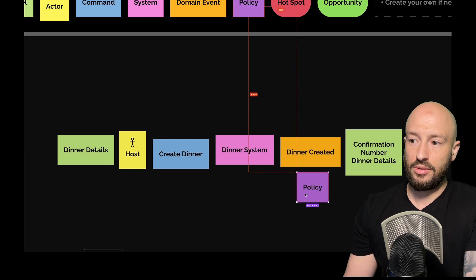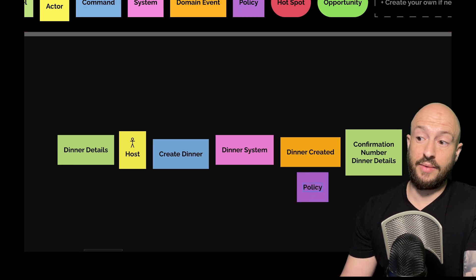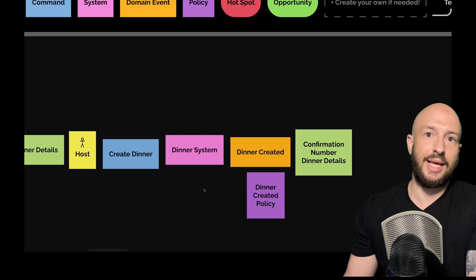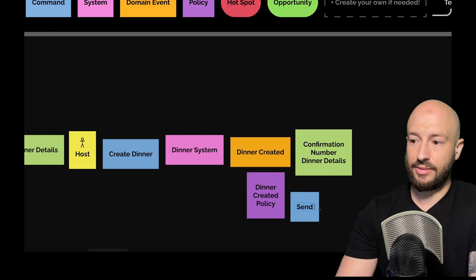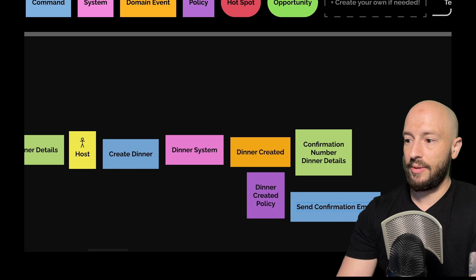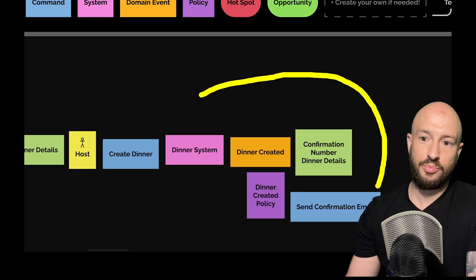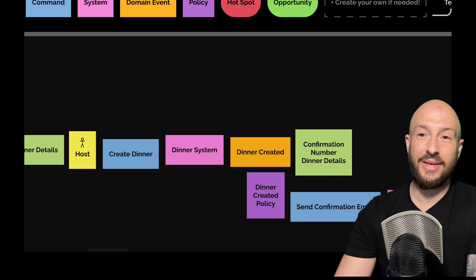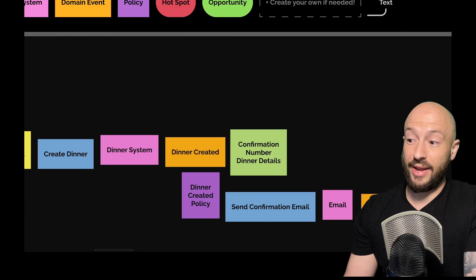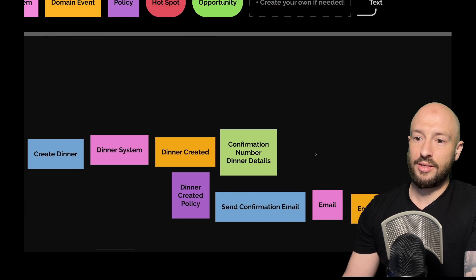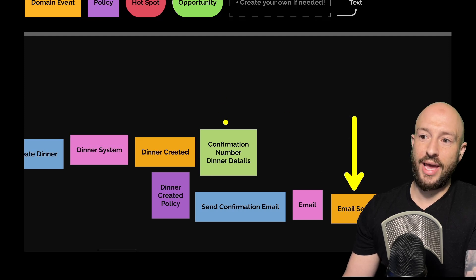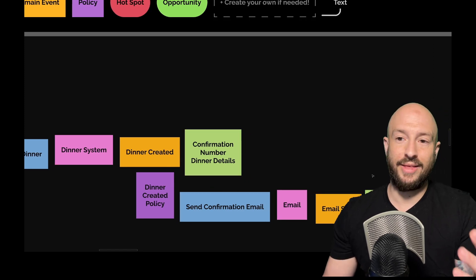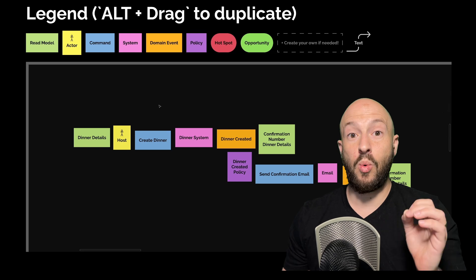After a domain event, you might also have a policy. For example, a 'dinner created' policy might trigger 'send confirmation email.' After the policy, you must have a system again — perhaps the email system — which produces another domain event: 'email sent.' This results in another read model, like the confirmation number and dinner details returned to the user. In process modeling, you start with a frame and follow these rules to work from an initial command to a set of final events.